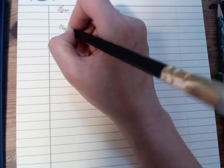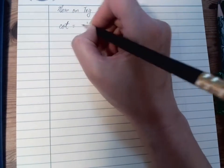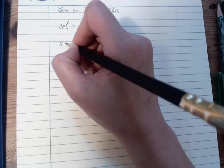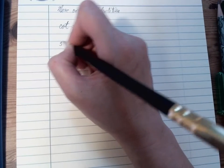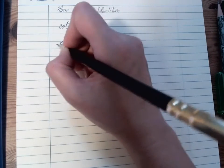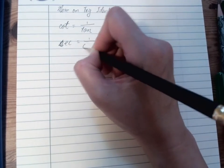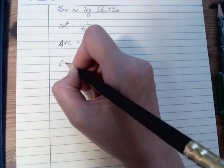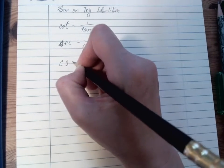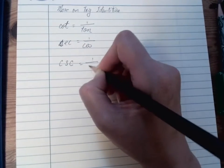So we will have cot equals to 1 over tan, sec equals to 1 over cos.